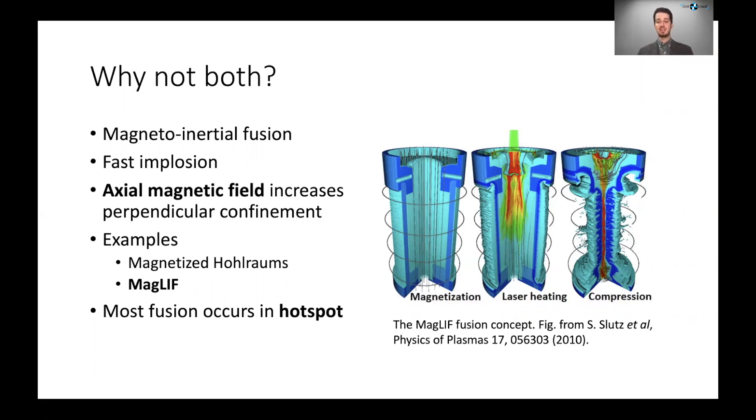The basic idea is to take a Z-pinch, but to add a magnetic field along the axial or the vertical direction, so up and down along the plasma column. And then as that plasma column compresses, you have the magnetic field prevent the transport of heat perpendicular to the magnetic field along the direction in which the plasma column is getting shortest.